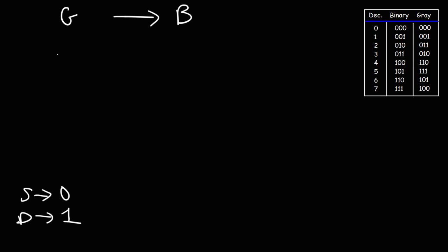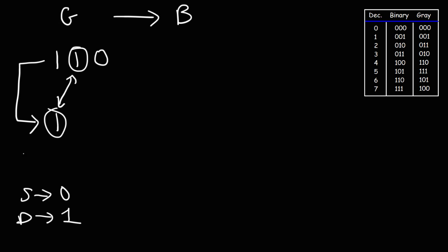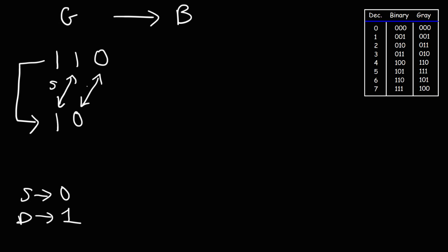Let's say we have the gray code 110 and we want to convert that to binary. First, rewrite the MSB, which is 1. Then compare adjacent bits in the binary result with the next gray code bit: 1 and 1 are the same, so we put 0. Then 0 and 0 are the same, so we put 0. So gray code 110 gives us binary 100.